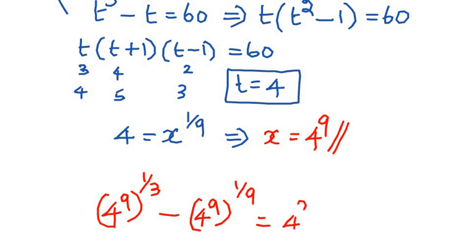Using the power rule a^m power n, (4⁹)^(1/3) equals 4³, which is 64 minus 4 equals 60.